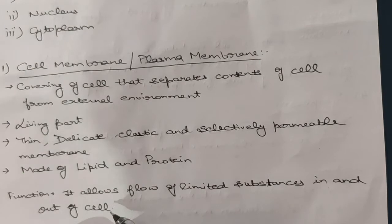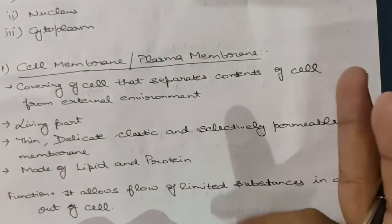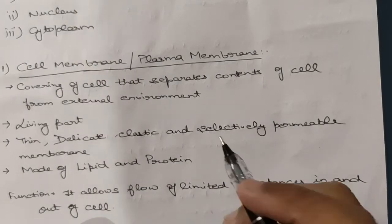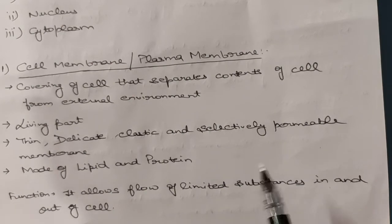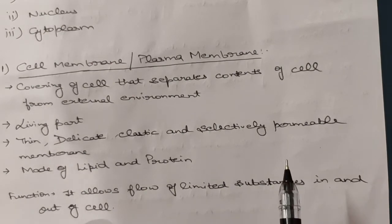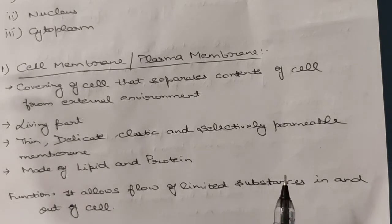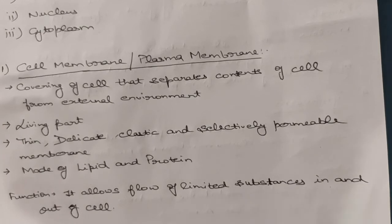The cell membrane is made of lipid and protein. Its functions are: first, it acts as a covering, protecting the internal contents of the cell from the external environment; and second, it allows the flow of limited substances in and out of the cell. Note that the main function of protection belongs to the cell wall.